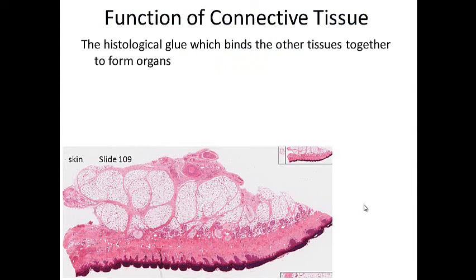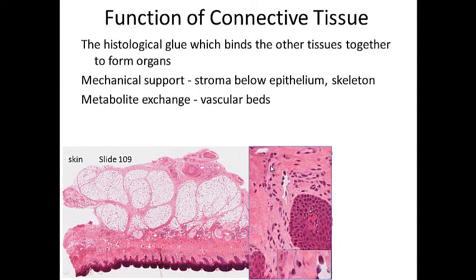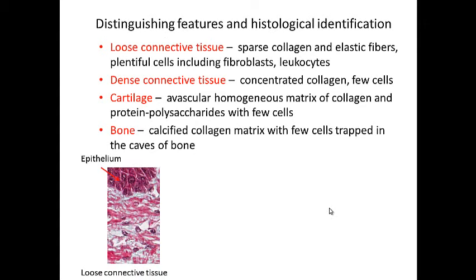The function of connective tissue is that it's a histologic glue — it binds things together in organs. Whenever you cut a steak, you go through connective tissue, which is more difficult to cut. It's the histologic glue that holds the meat together. It also provides mechanical support as the stroma below the epithelium. It has metabolic exchange through the vascular beds below that provide nutrients. It also stores energy in fat cells and is the site of action of the immune system for inflammation, with plasma cells visible right inside these epithelium cells.